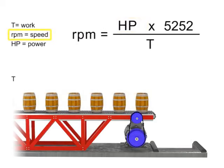If speed remains constant, then torque and horsepower are proportional. As the torque increases, horsepower also increases to maintain constant speed. As the torque decreases, horsepower also decreases to maintain constant RPM.